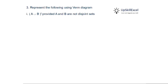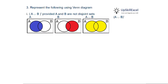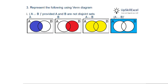Represent the following using Venn diagrams. First: A union B complement, where A and B are not disjoint, meaning there is an intersection. A is shown in blue, B in red, and their union includes both A, B, and the common area shown in yellow. Taking the complement means considering all area outside this yellow region, shown in light blue.